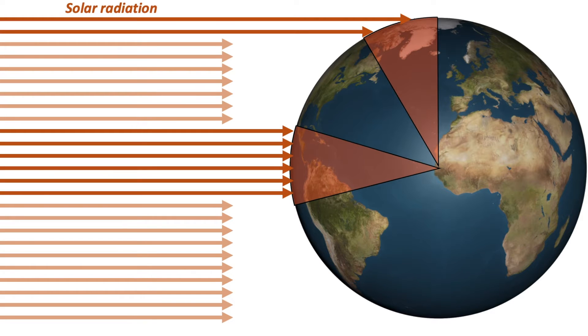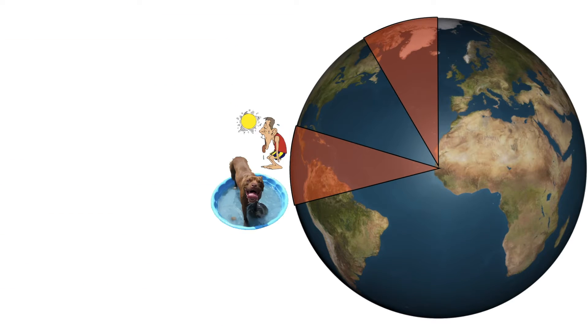But at high latitudes, that same solar radiation is spread out over a much larger geographic area. So, over the course of the year, the low latitudes would always be warm, and the high latitudes would always be cold, right?